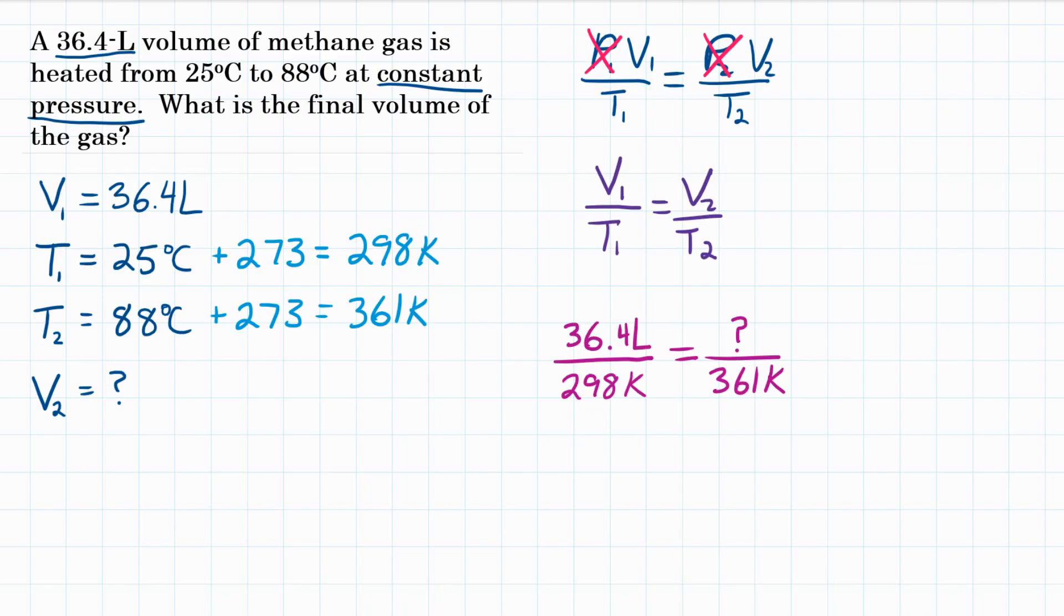To solve this, we're going to multiply both sides by 361 Kelvin, and that is so on the side with our unknown, we will get everything else to cancel out. So we're just left with everything that's on the left side, in which we can solve.